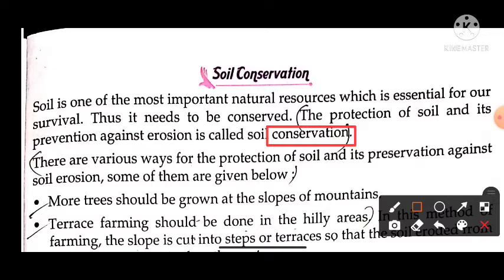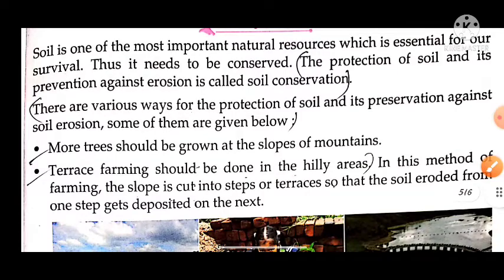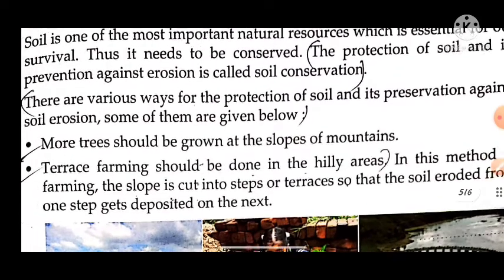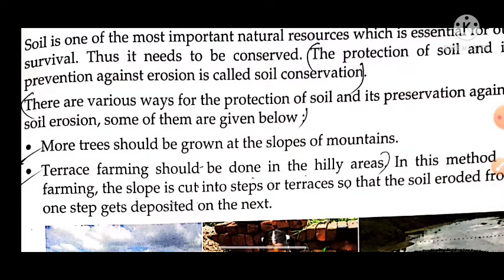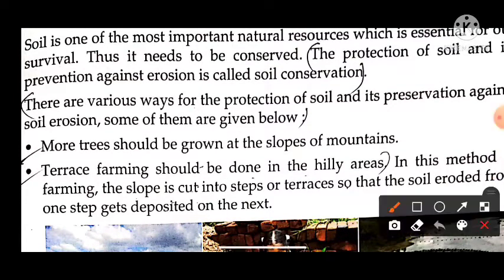Soil protection and preservation have many methods. The first method is that more trees should be grown at the slopes of mountains. We have to plant trees and grow them at the slope of mountains.